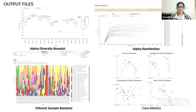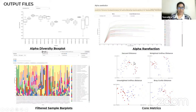And the QIIME2 core metrics matrix — an array of alpha and beta diversity measures that can be generated with a single QIIME2 command. The diversity core metrics phylogenetic command produces both phylogenetic and non-phylogenetic measures, as well as alpha and beta diversity measures, including Jaccard distance — a qualitative measure of community dissimilarity — Bray-Curtis distance — a quantitative measure of community dissimilarity — unweighted UniFrac distance, and weighted UniFrac distance.